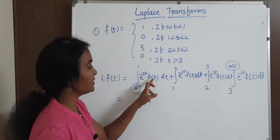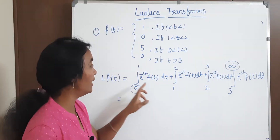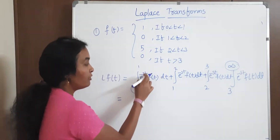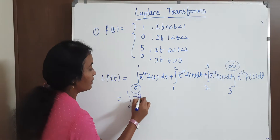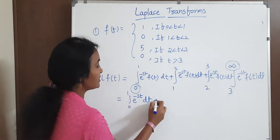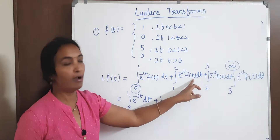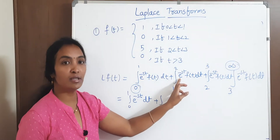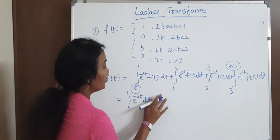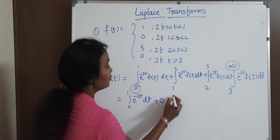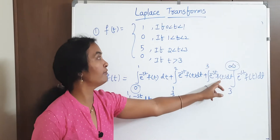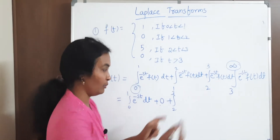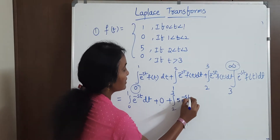For 0 to 1, e to the power of minus st times f of t: the function value is 1, so it becomes 1 times e to the power of minus st. For 1 to 2, the function value is 0, so 0 times the integrand — the whole term becomes 0. For 2 to 3, the function value is 5, so we put 5 times e to the power of minus st. For 3 to infinity, the function value is 0, so that term also vanishes.